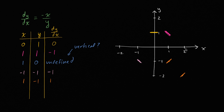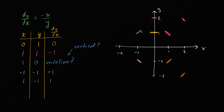If you did positive (2, 2), that's negative two over two, so you'd have a slope of negative one right over here. We could keep doing a bunch of points. At (−1, 1), negative negative one is one over one, so you have a slope of one. At (−2, 2), the same exact idea — it would look like that.